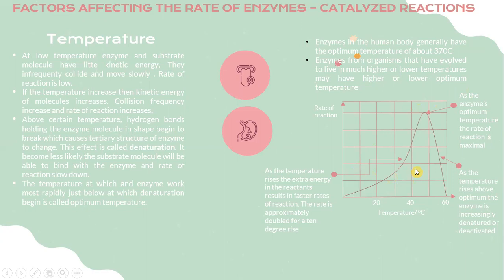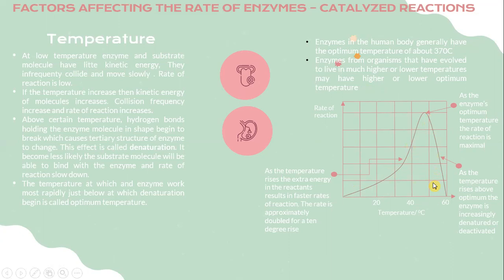This graph shows the rate of reaction versus temperature. As you can see, as the temperature rises, the extra energy in the reactants results in a faster rate of reaction, and the rate approximately doubles for every 10-degree rise. At the optimum temperature, the rate of reaction is at its maximum. Above the optimum, as the temperature continues to rise, denaturation is activated and the rate of reaction falls.